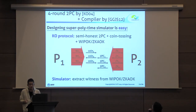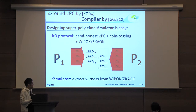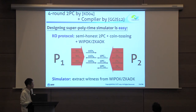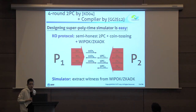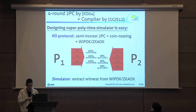Actually, designing a super-polynomial simulator for the KO protocol is not so difficult. The KO protocol consists of a semi-honest standard two-party protocol, coin tossing, witness indistinguishable proof, and a zero-knowledge argument. The simulator works by extracting a witness from the WI proof or zero-knowledge argument using its argument-of-knowledge property. We can design a super-polynomial time simulator by modifying the original simulator to extract witnesses from the WI proof or zero-knowledge argument by brute force.